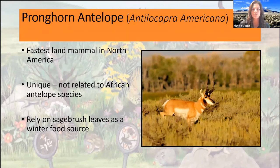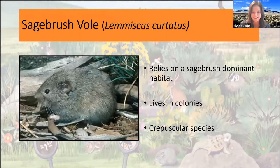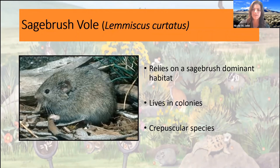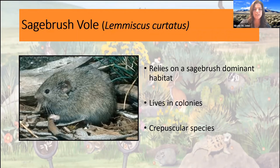Moving on to our next species, we have the sagebrush vole. This guy looks a little bit like a mouse, but he's not. He relies heavily on the sagebrush ecosystem — he likes to burrow in the loose soils at the base of the big sagebrush plants, using it for shelter. His diet consists of sagebrush flowers that have fallen to the ground, sometimes the leaves, forbs, and the grasses within the ecosystem. Typically they live in colonies and they're also a crepuscular species, meaning they're most active during the morning and evening hours. A lot of research still needs to be done — there's still a lot that we don't know about his biology, and in past years we have had biologists on the landscape performing more research to better understand this species.